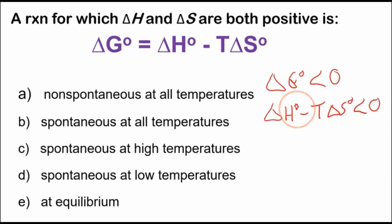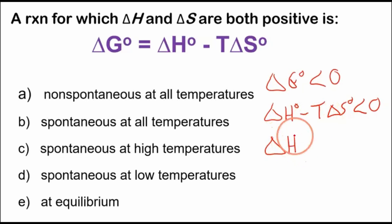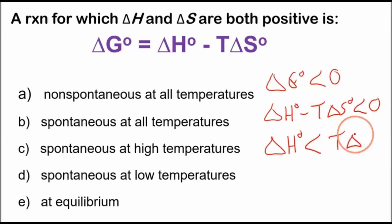These superscripts just mean it's under standard state at a standard pressure of one bar. If the change in Gibbs energy is less than zero, the reaction is spontaneous. Rearranging, the change in enthalpy must be less than temperature times the change in entropy for the reaction to be spontaneous.